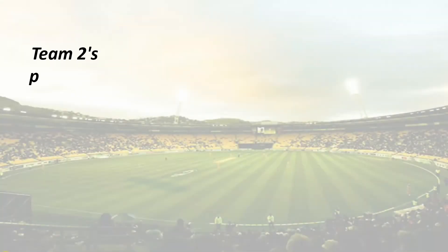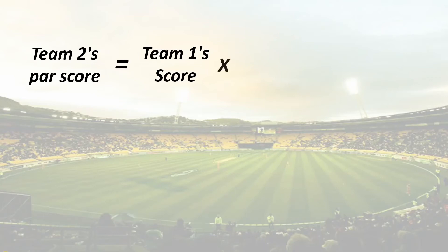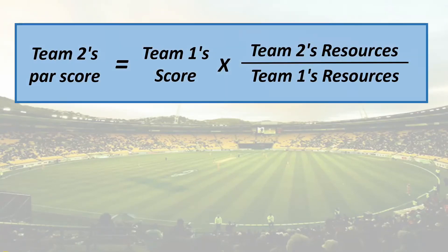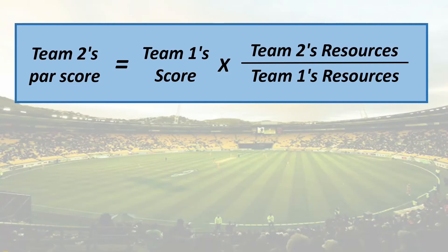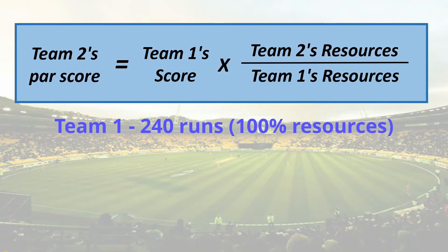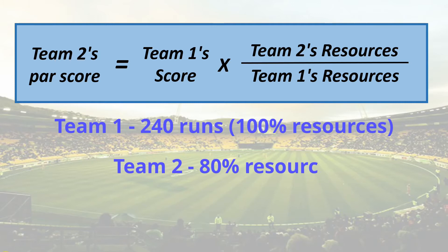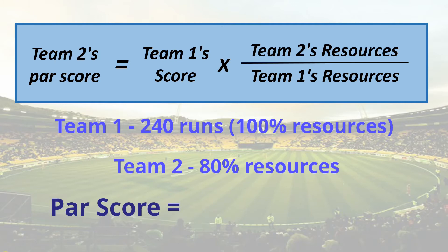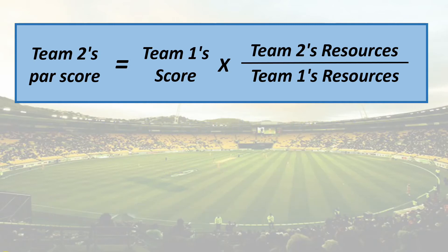Mathematically, team 2's par score equals team 1's score multiplied by team 2's resources, divided by team 1's resources. For example, if team 1 scored 240 runs using 100% of resources and team 2 has only 80% of resources available, the par score for team 2 becomes 240 × 80 / 100, which equals 192.